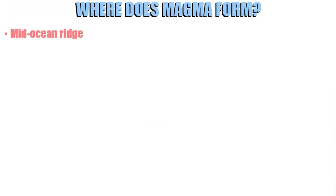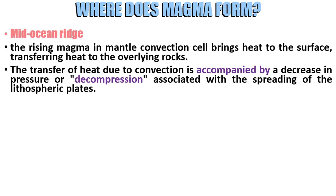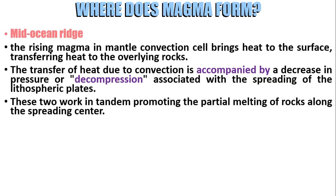Where does magma form? The first location is at mid-ocean ridges. The rising magma in mantle convection cells brings heat to the surface, transferring heat to the overlying rocks. At the same time, the hot rising mantle rocks experience decompression melting. The transfer of heat is accompanied by a decrease in pressure, associated with the spreading of the lithospheric plates. These two work in tandem in promoting the partial melting of rocks along the spreading center.